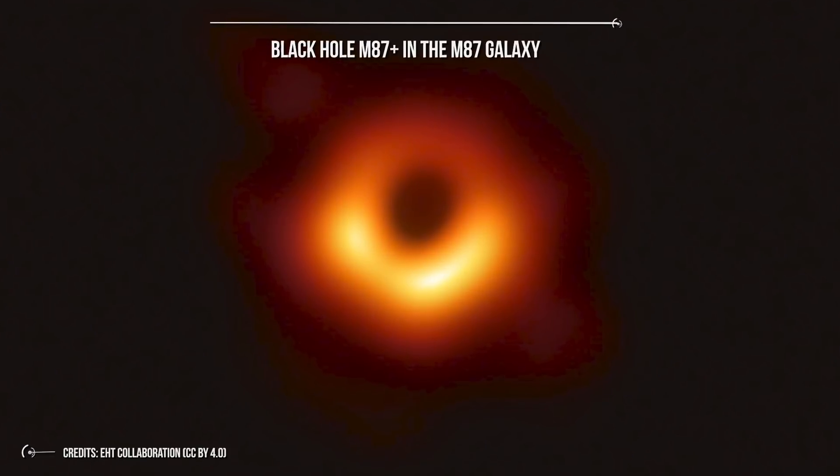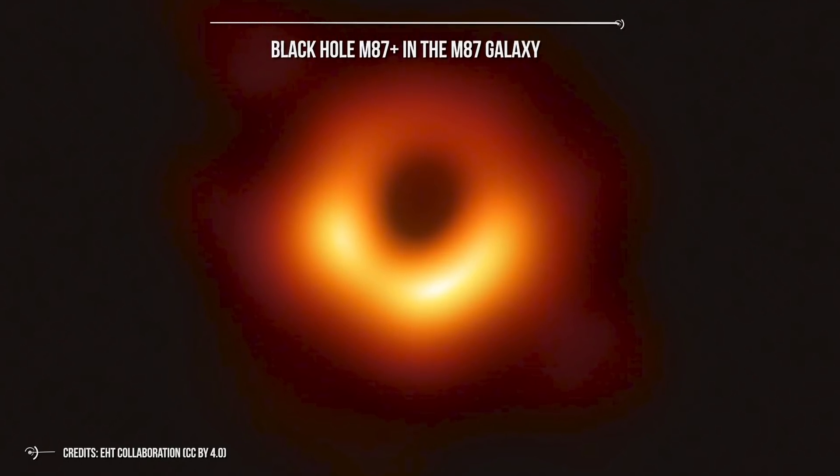Well, all of these objects exist in our universe, and we have proof of that. For example, we know that a black hole exists right in the center, in the nucleus of our Milky Way. Here's a picture of the event horizon of the black hole M87-plus in the M87 galaxy.